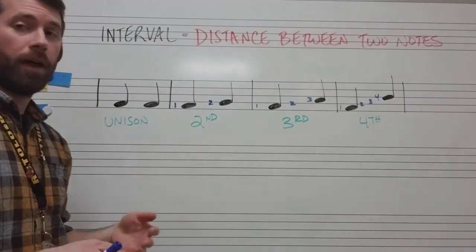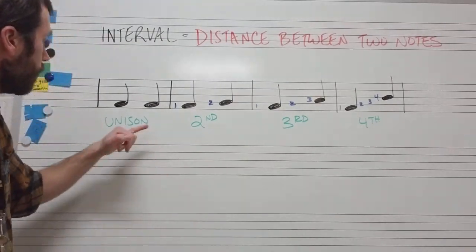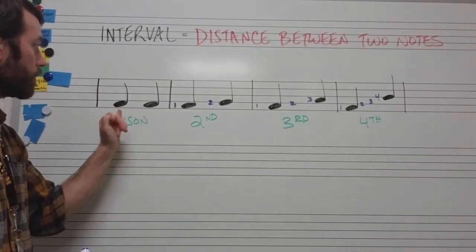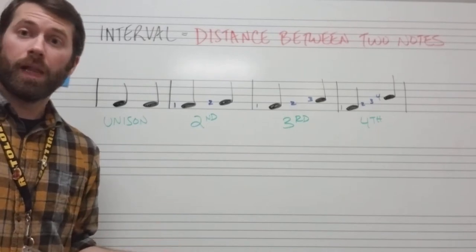Up here on the board I have some examples of what some intervals would look like in your music. The first example is what's called a unison. It's called that because these two notes are on the same space, or they could be on the same line.